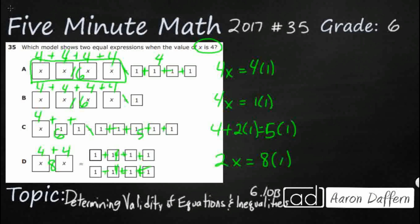Well, we know the answer is D, so let's look at that one. We want to isolate x, and it's being held by a 2 times. The opposite of multiplication is division. We can't just divide one side of the equation without dividing the other — so in order to keep things balanced, we have to divide both sides by 2. This 2 divided by 2 cancels out, and this gives us x equals 8 over 2, which equals 4. Our answer is D.